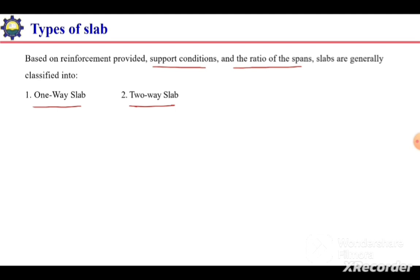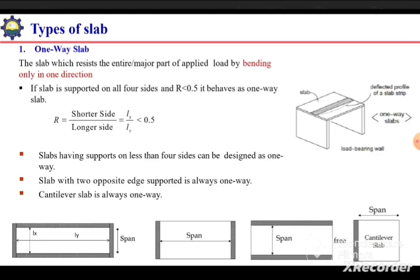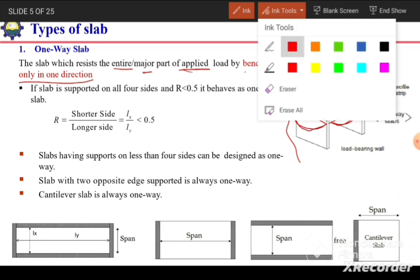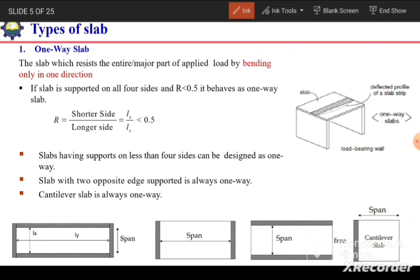A one-way slab is a slab which resists the entire or major part of the applied load by bending in only one direction. As shown in the figure, a slab panel supported by walls on two ends will bend only in one direction under a uniformly distributed load, and is therefore termed a one-way slab.